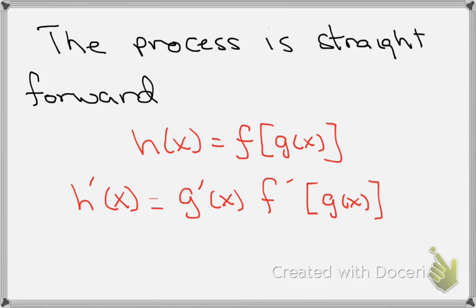The process is straightforward. We think of our function h(x) as a composite function f of g of x, and h prime of x will be the derivative of g, which is g prime of x, times the derivative of f, which is f prime evaluated at g of x.